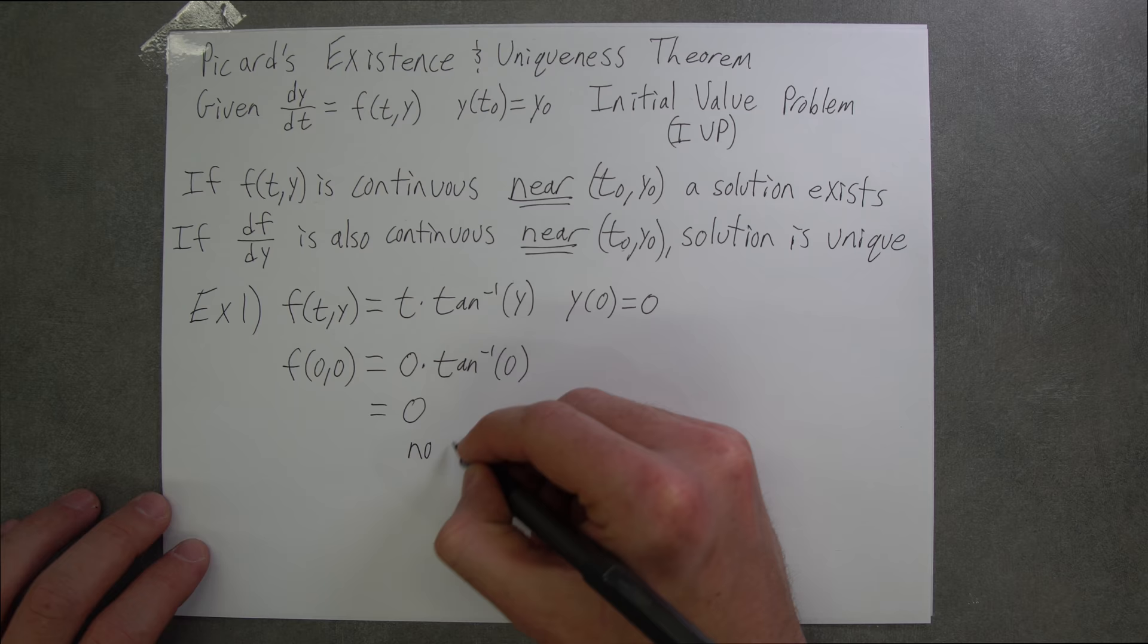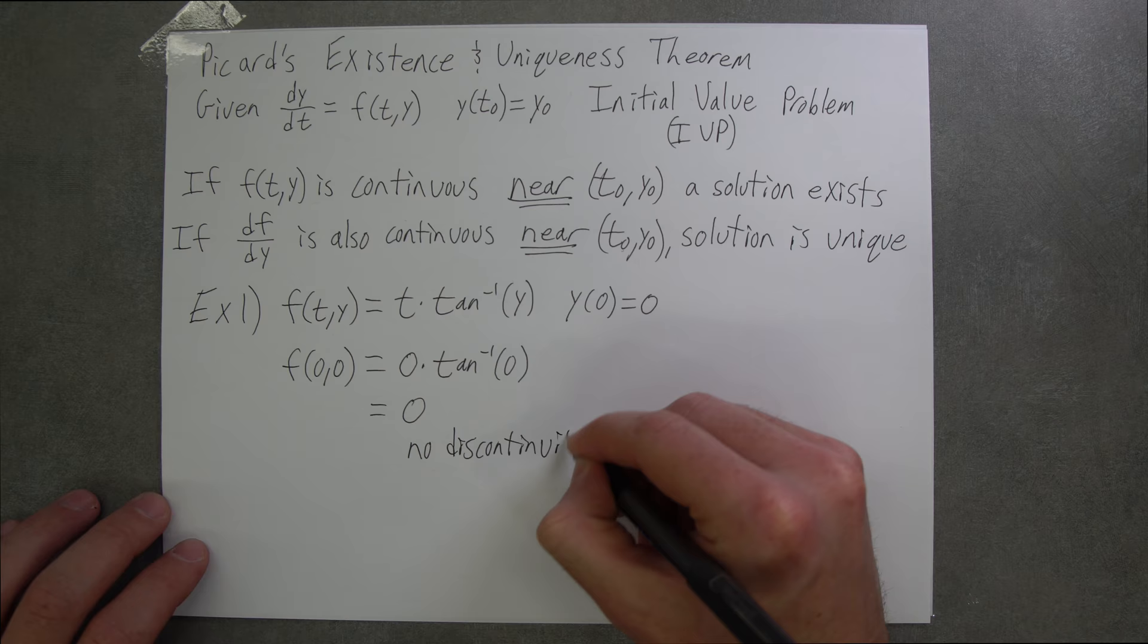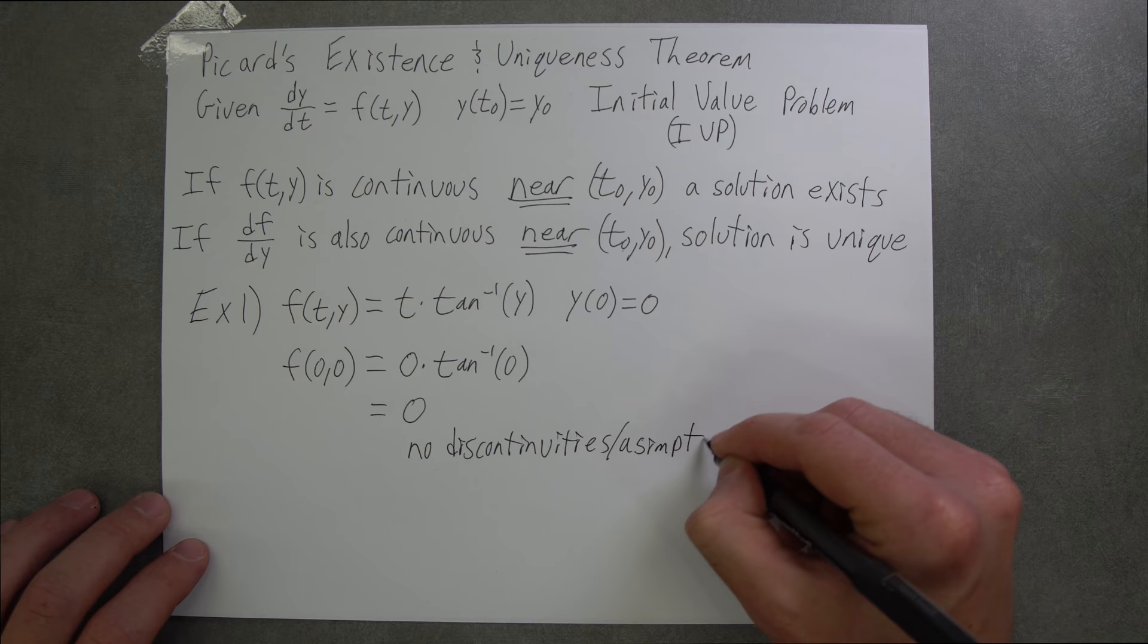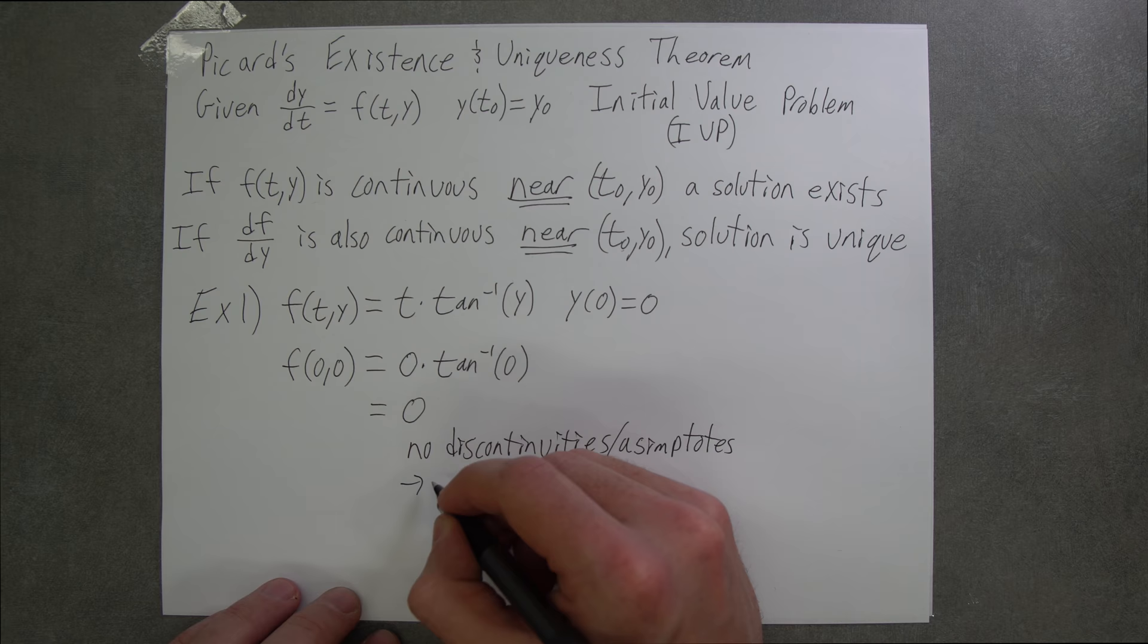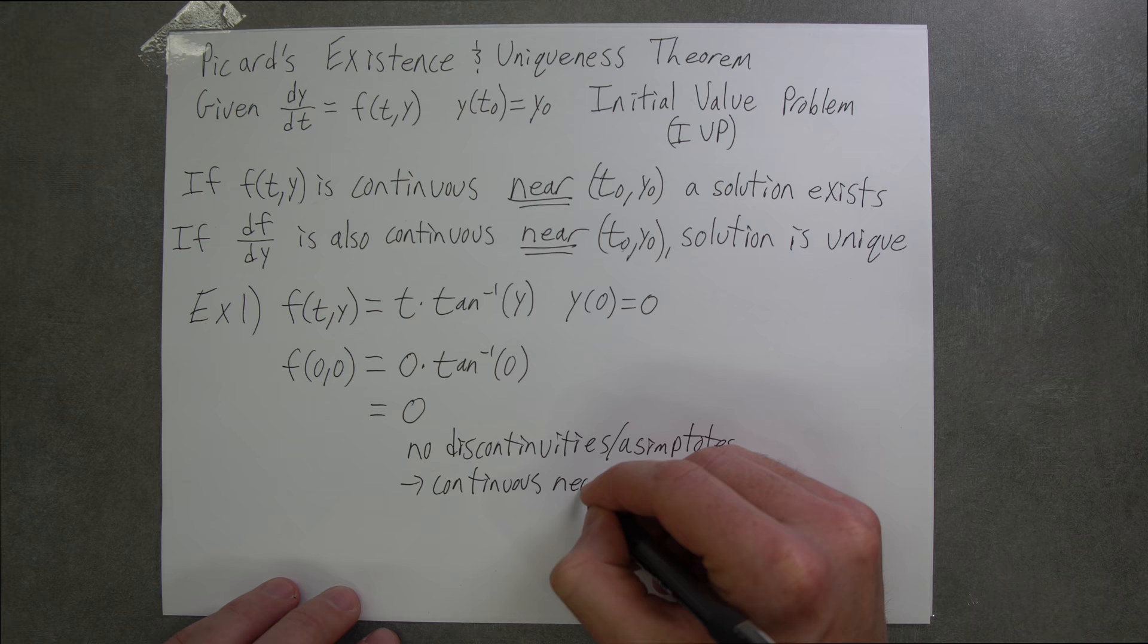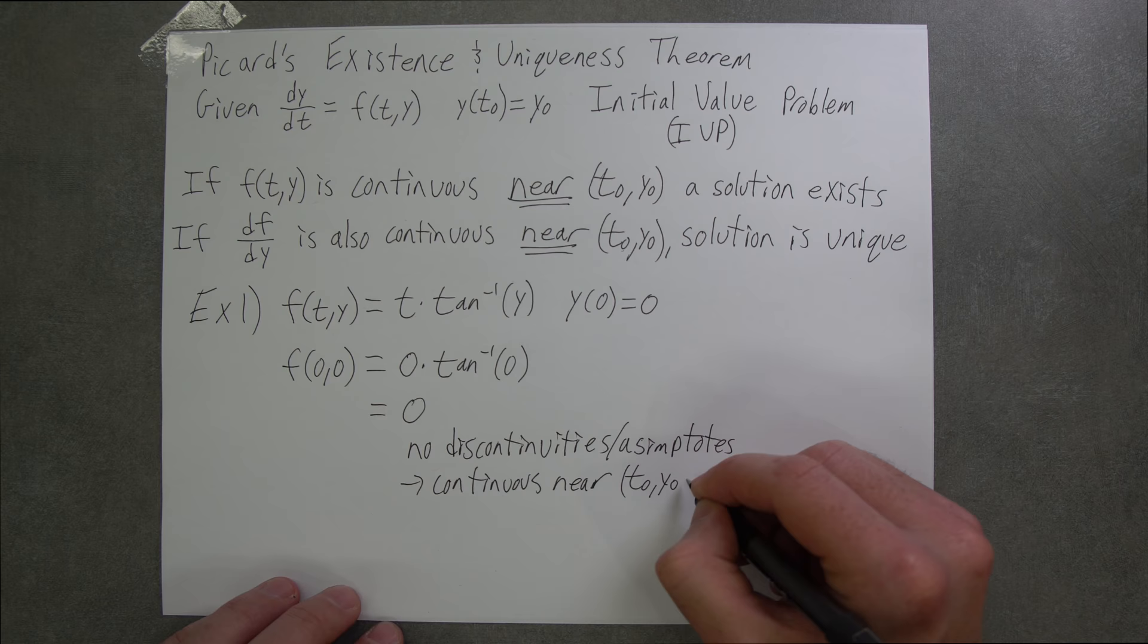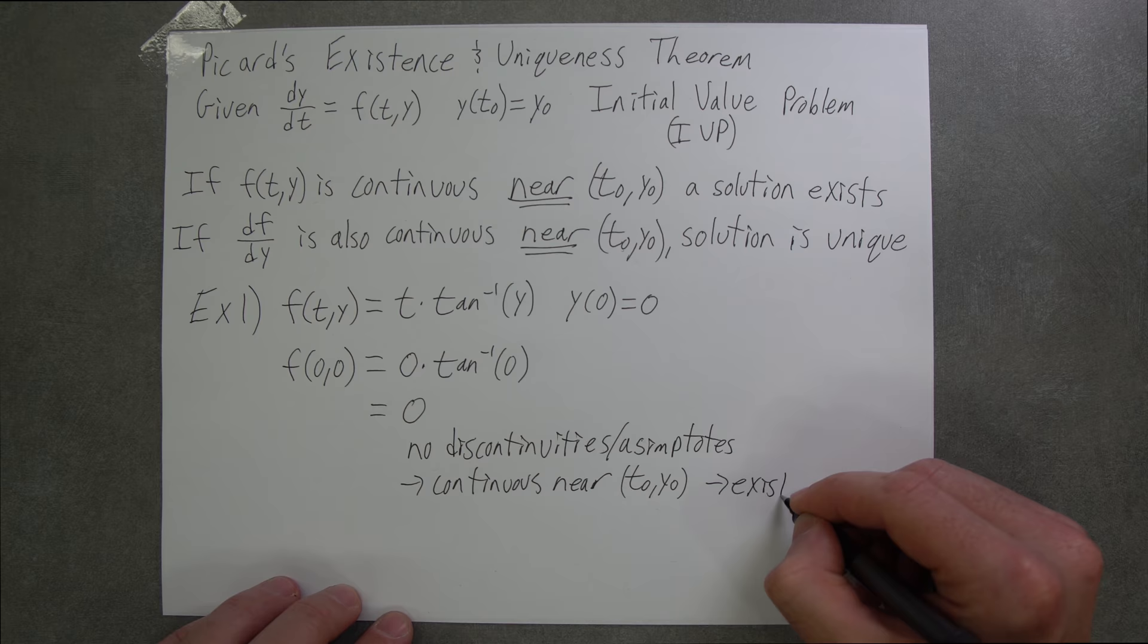Furthermore, looking at this, we know that there are no discontinuities or asymptotes near our point, so it's going to be continuous near (t0, y0), or (0,0) in our case. This shows existence.